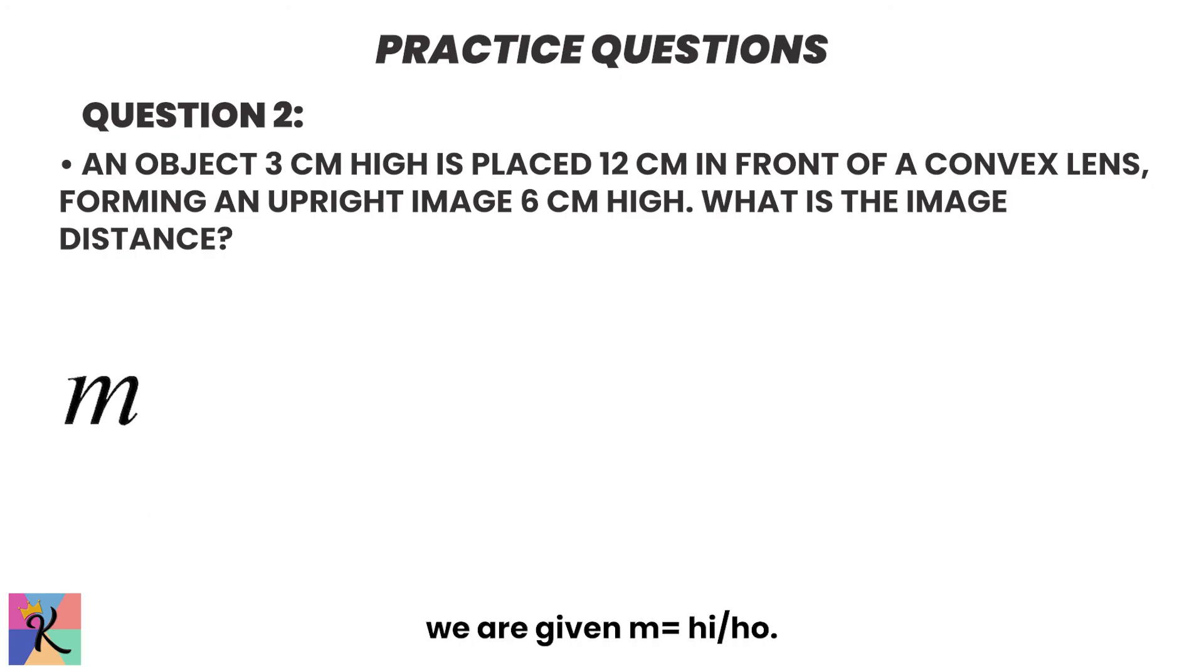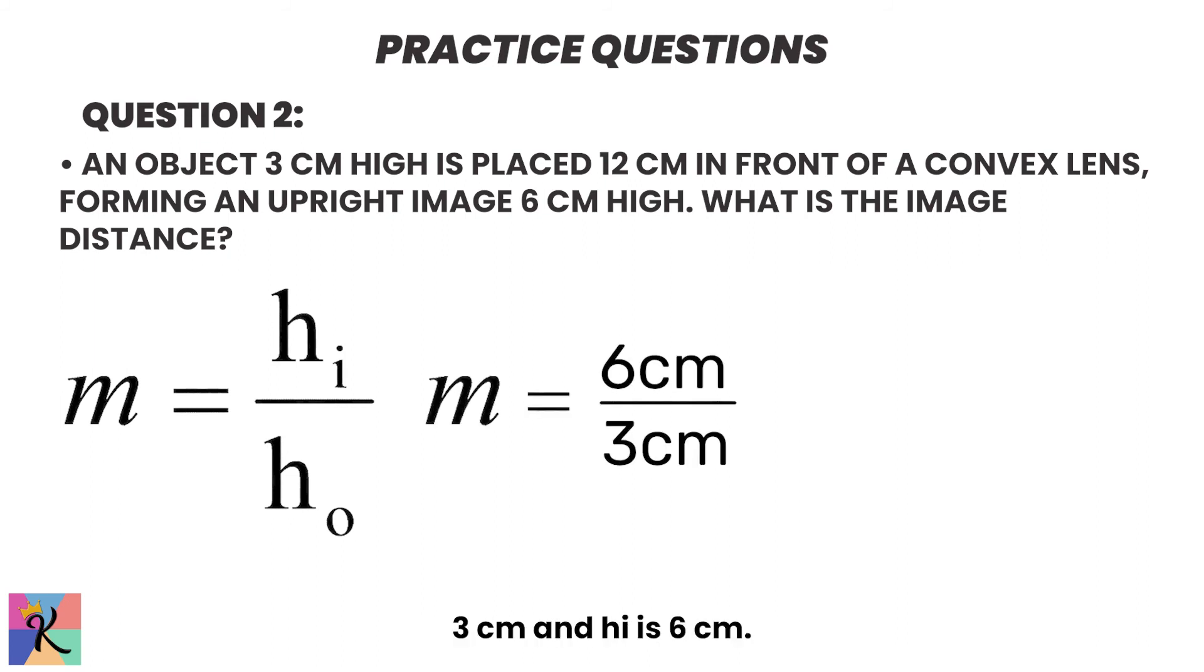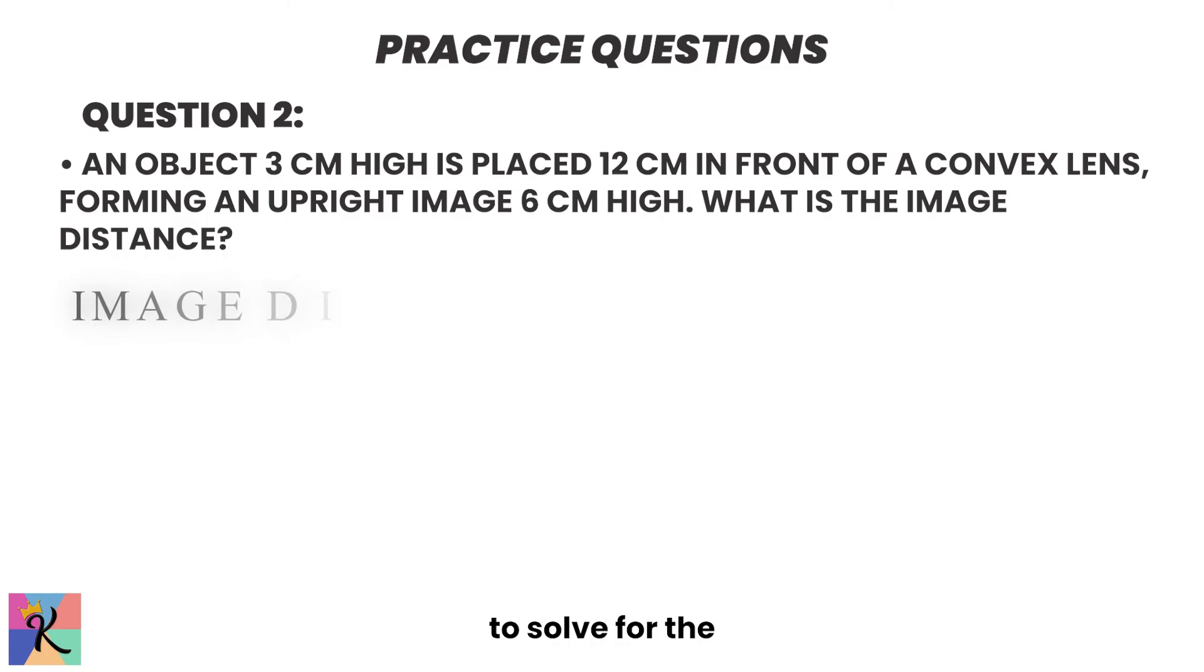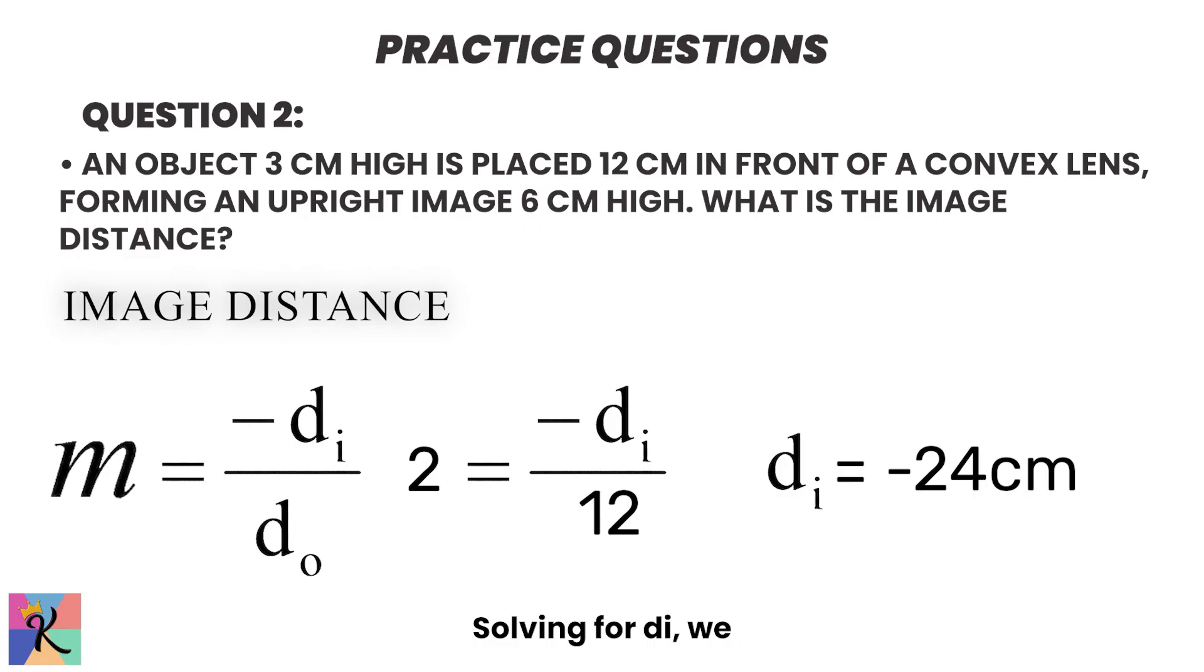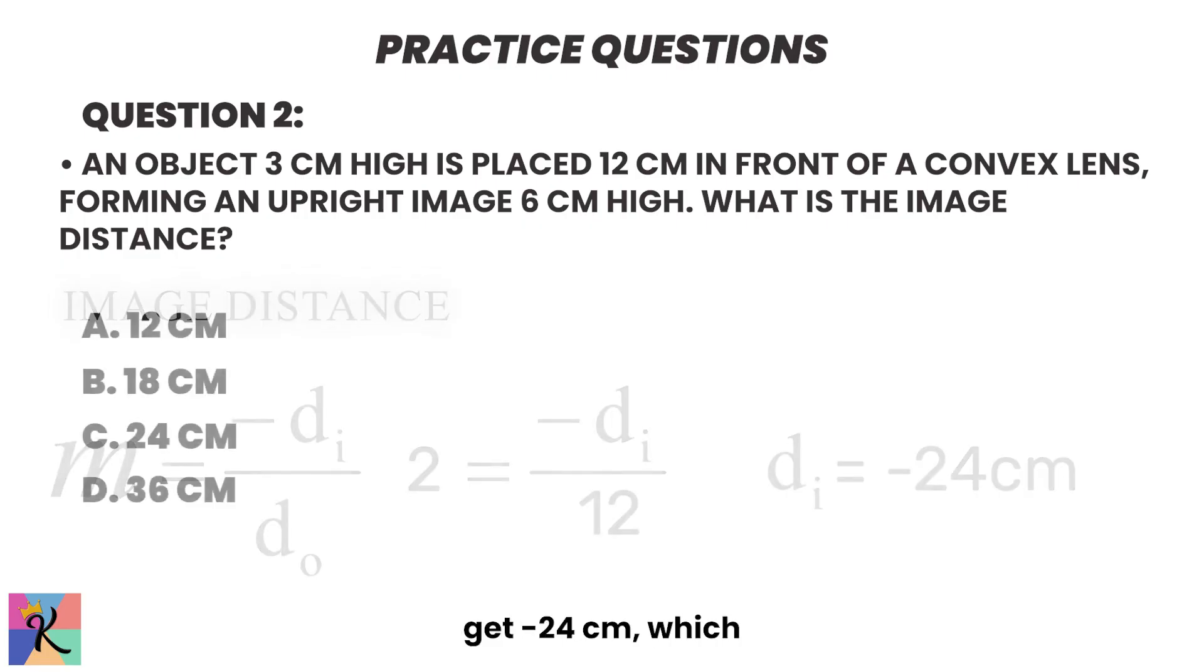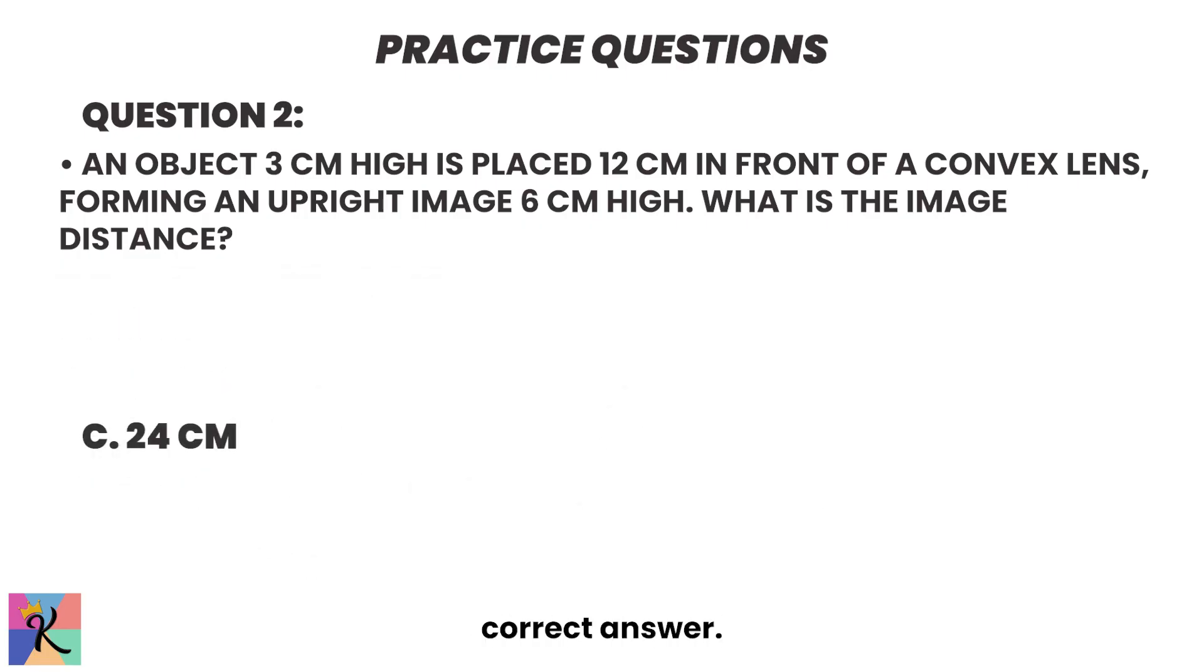So, using the magnification equation, we are given M equals HI over HO. We are given HO is 3 centimeters, and HI is 6 centimeters. So, we'll get M equals 6 over 3, which gives us 2. So, now we're going to solve for the image distance. M equals negative DI over DO. So, we then get 2 equals negative DI over 12. Solving for DI, we get negative 24 centimeters, which gives us C as the correct answer.